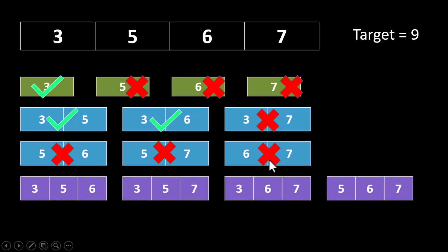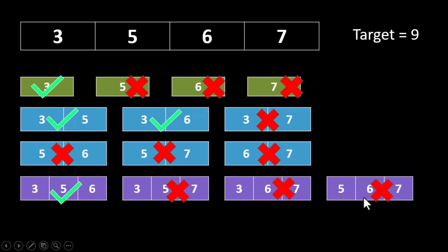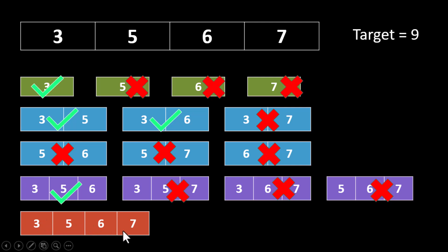Now let's take the subsequences with length 3. In the first, the minimum is 3, the maximum is 6, the addition is 9, so it is a valid subsequence. In the next, the minimum is 3, the maximum is 7, giving 10 which is greater than 9, so it is not valid. The subsequent sums are 10 and 12 — both invalid. The last subsequence containing all values (length 4) has minimum 3, maximum 7, addition 10, and is not a valid subsequence.